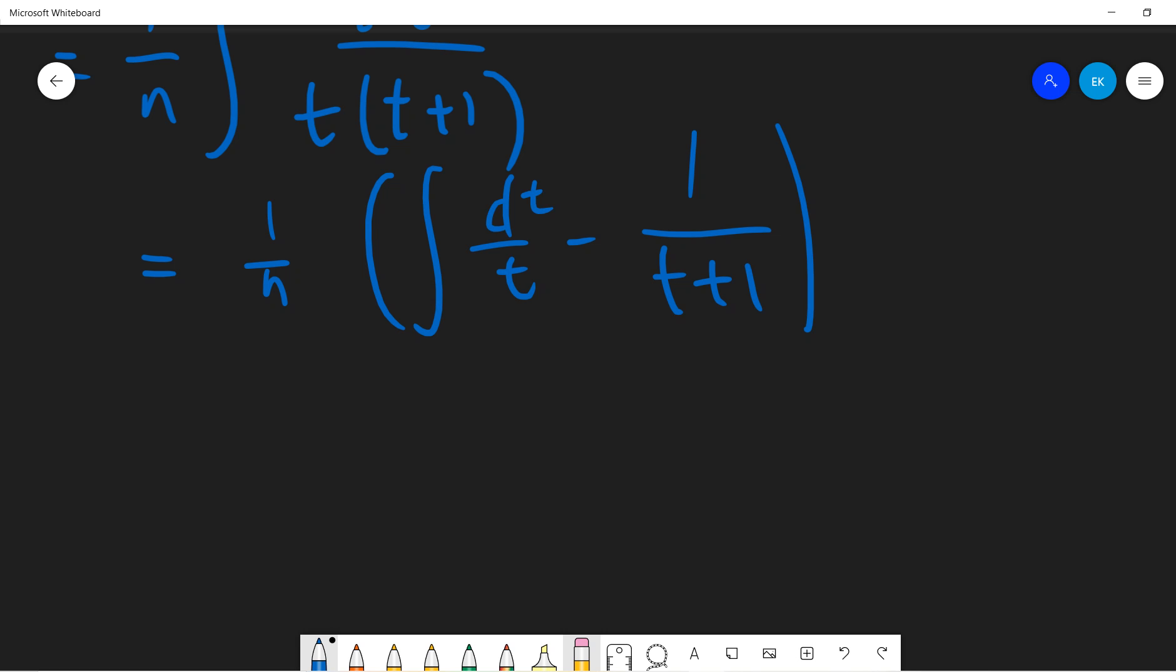And let's say dt, dt. And just do each part. So the first part is 1 over n log t. The second part is log t plus 1, right? Okay, and I add your unknown constant.